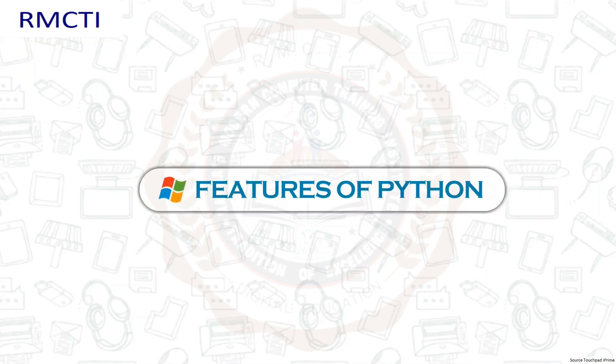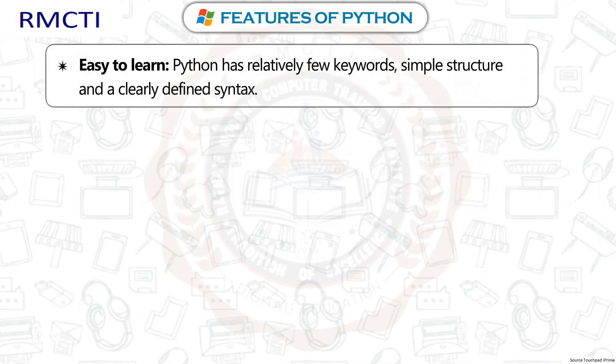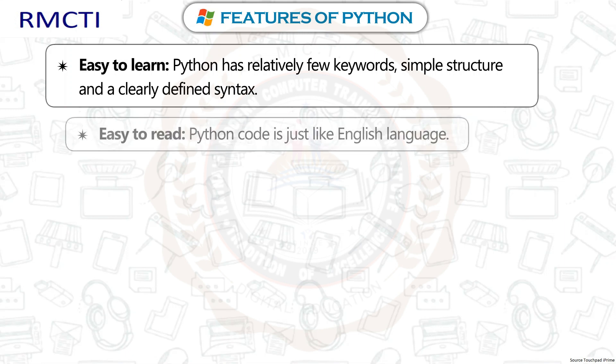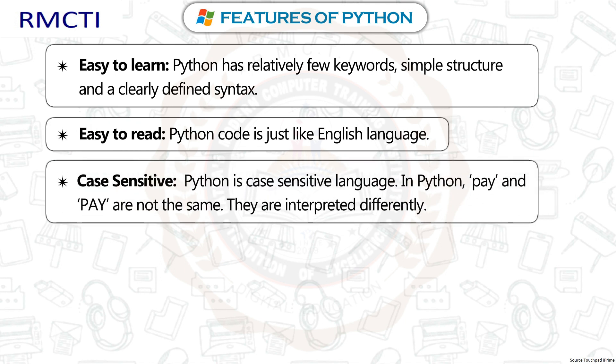Features of Python. Easy to learn: Python has relatively few keywords, simple structure, and a clearly defined syntax. Easy to read: Python code is just like the English language. Case-sensitive: Python is a case-sensitive language. For example, 'pay' and 'Pay' are not the same and are interpreted differently.